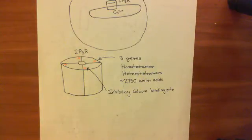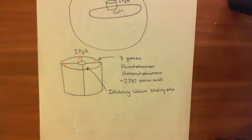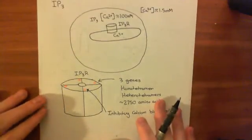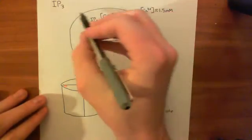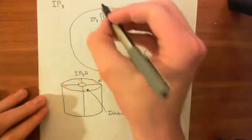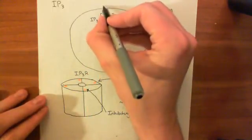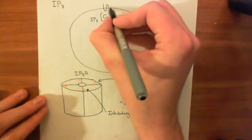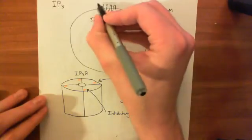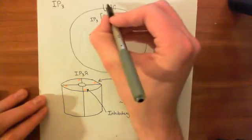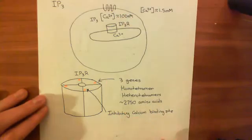Welcome to this next video on store-operated calcium entry. We've seen how by stimulating our cell with histamine we can activate the production of IP3. We're considering a local stimulation of the cell with histamine — maybe a neuron has stimulated our cell and released histamine onto a specific point. So you've got a local rise in IP3, rather than a whole-cell rise.